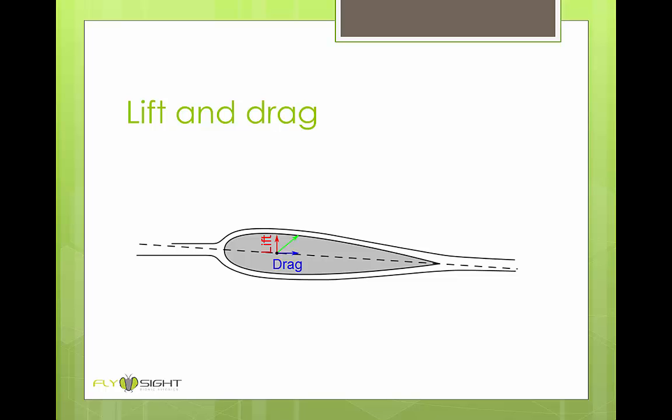We can divide this force into two parts, lift and drag. Lift is the part of the aerodynamic force which is perpendicular to the relative wind, and that's shown with the red arrow. Drag is the part that's parallel to the relative wind, and that's shown with the blue arrow.